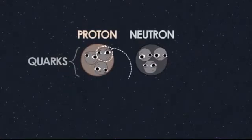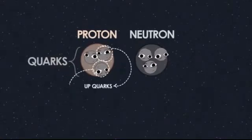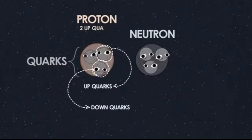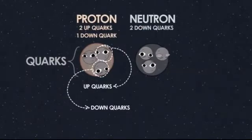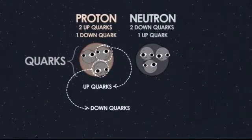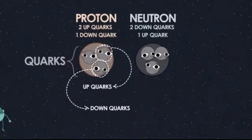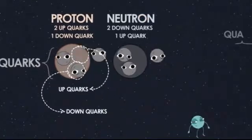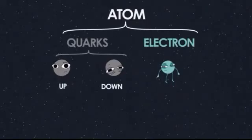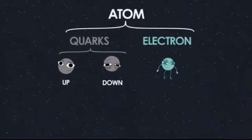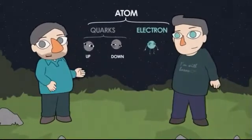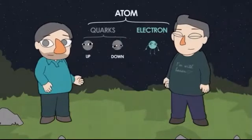Specifically, protons and neutrons are made of two different kinds of quarks: up quarks and down quarks. One of them is two ups and a down, and the other is two downs and an up. The point is, atoms are made of electrons and quarks. So that's three fundamental particles then — two quarks and the electron. Is that what everything's made of?